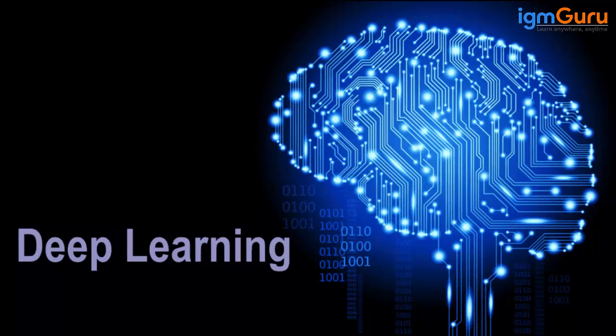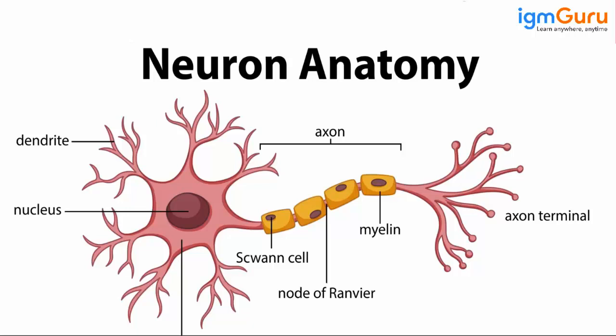Everyone knows that the human brain is the most complex machine. In the human brain we have billions of neurons, and these neurons are responsible for processing the information coming from the senses — through the eye, skin, ear. Whatever information is coming from the senses, they process this information and take the signal to different parts of the brain to take some kind of a decision.